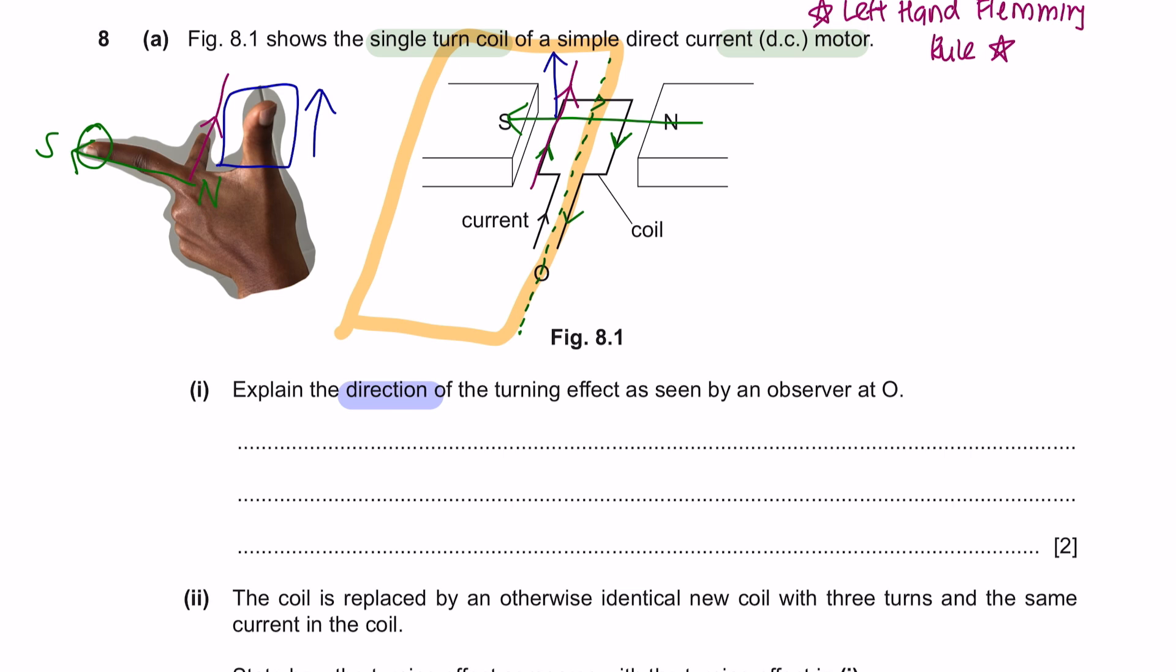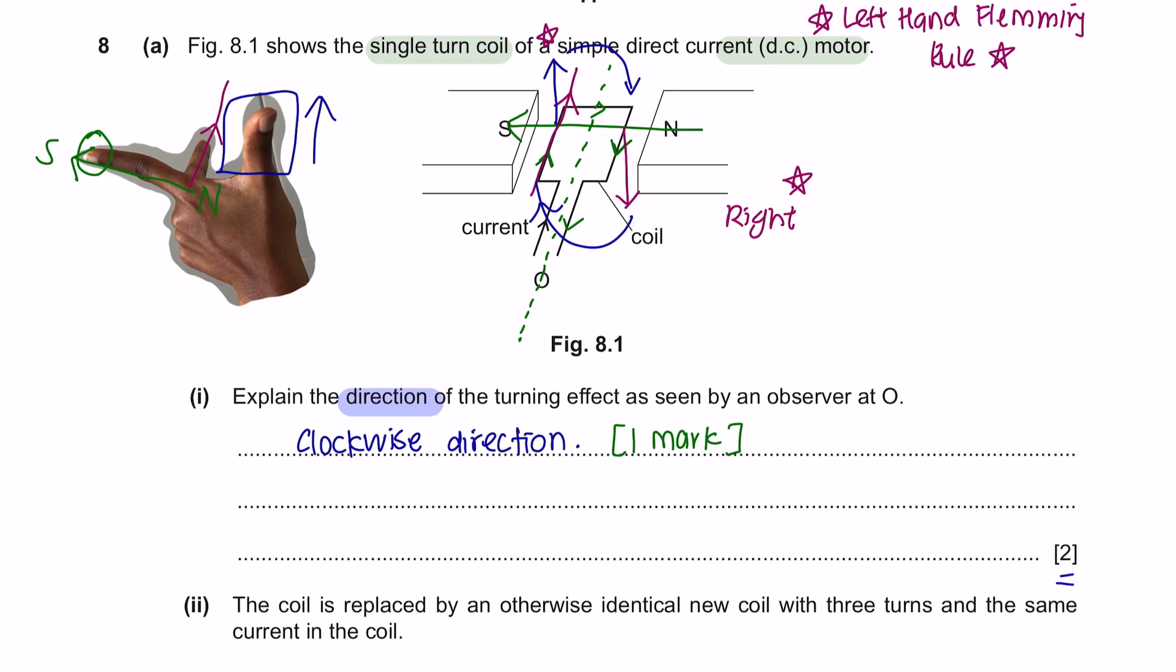If this is going upwards, it will be opposite on the other hand. Over here, on the right side, it will be downwards. This here will give us a clockwise direction. Stating the direction will only give you one mark. For the second mark, you can say the reason is because on the left side, it's pointing upwards, and on the right side, it's pointing downwards.